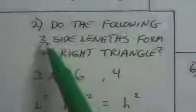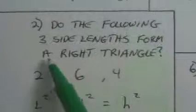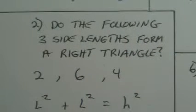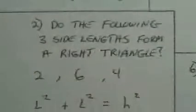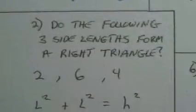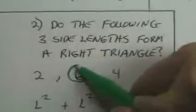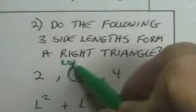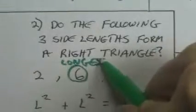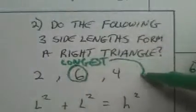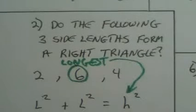Number two. Do the following three side lengths form a right triangle? Does it form right? In other words, does the Pythagorean theorem work? Does L squared plus L squared equals H squared? Now wait a minute. Let's identify which one's a hypotenuse and which ones are the legs. The longest side is always a hypotenuse. So this is the longest, and the longest is a hypotenuse. So that's got to go over there.